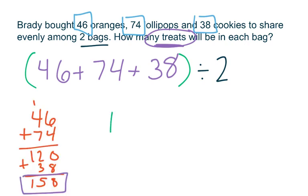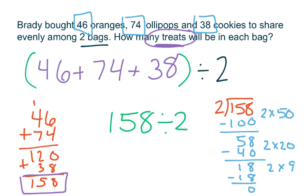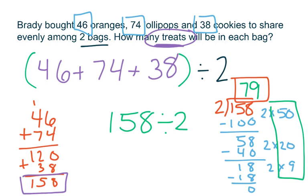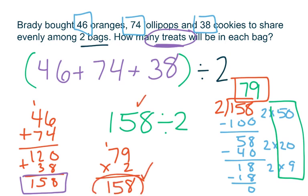When we add all of the treats together, we have a total of 158 treats, and then we need to divide into our two bags. I'm going to go ahead and use partial quotients to solve this problem. I have all of my pieces right here that I can add up, and when I add 50 plus 20 plus 9, I'm left with 79. I want to check my work to make sure that Brady is going to put 79 treats in each of those two bags. All I need to do is multiply 79 times 2. Nine times 2 is 18, and 2 times 7 is 14, plus 1 more is 15. So when I check with multiplication I end up with 158 — my same total. There will be 79 treats in each bag.